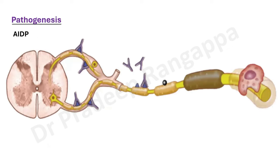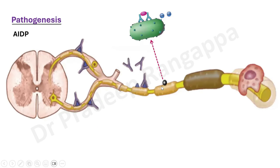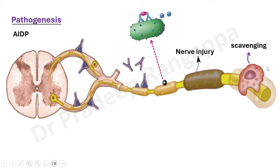When we talk about pathogenesis, this is a beautiful figure you can try to put in exams. In acute inflammatory demyelinating polyneuropathy, you can see antibodies attacking the Schwann cells causing demyelination, along with complement activation. So basically there are antibodies against the Schwann cells which leads to demyelination secondary to complement activation, which leads to nerve injury, and then scavenging of the myelin sheaths by activated macrophages. In the axonal variant, antibodies are triggered against the axon, with complement activation, and anti-ganglioside antibodies against GM1, GM1B, GD1A — leading to nerve injury and scavenging of the axon and myelin sheath.